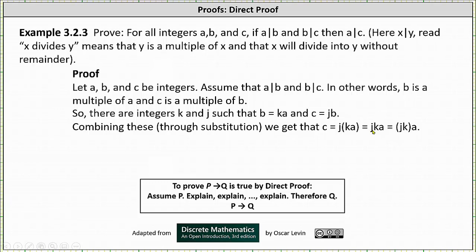We can also write C as just J times K times A, which is equal to the product of J and K times A.